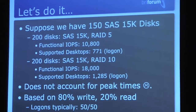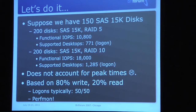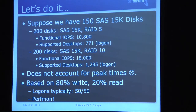For example — and these are not accurate numbers — if we took 150 SAS 15K drives and had 200 of them, our functional IOPS might be about 11,000, and we could support about 771 desktops at login. Where if we added 200 disks at SAS 15K RAID 10, our functional IOPS of 18,000 should get about 1,300. Another big player that dramatically affects this is cache — various types of cache can dramatically affect these numbers based on the product and caching algorithms.